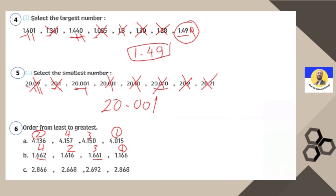Letter C: the numbers are 2.866, 2.668, 2.692, and 2.868. Finding the smallest: all start with 2. In tenths: all have 6. In hundredths: 6, 6, 9, 6 — so 9 is the largest, meaning 2.692 is not the smallest. Comparing remaining: 2.668 is the smallest. Then 2.692, then 2.866, and the largest is 2.868.